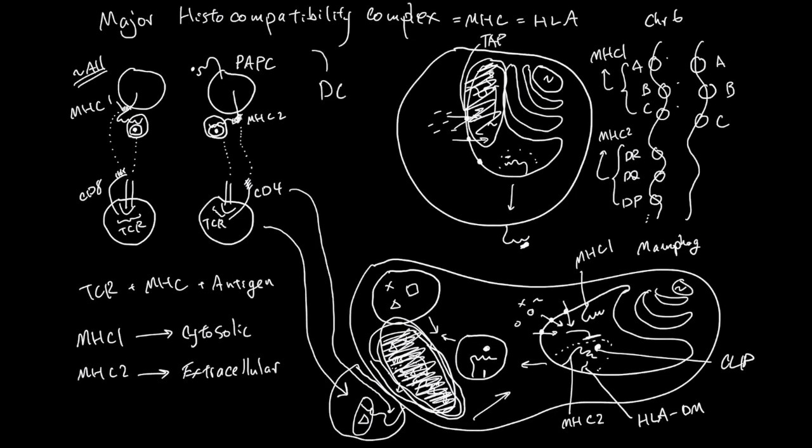Lastly, dendritic cells are special antigen-presenting cells because they have, like any other professional antigen-presenting cells, MHC-1 and MHC-2. But these antigens can come from other cells.